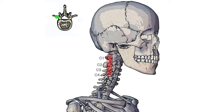On each of these lateral sides we've got our transverse process, and this is the section which the levator scapulae is going to connect to. So it's going to be connecting to each of these sections on the cervical spine, on each of these transverse processes.